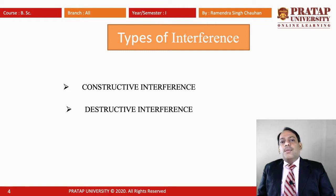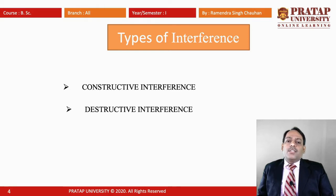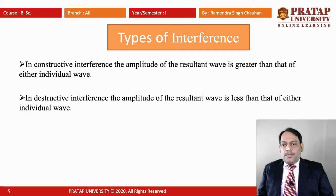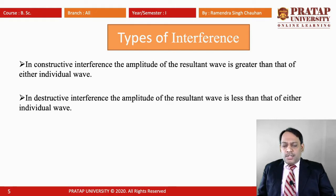Interference can be of two types: one is Constructive Interference and the second one is Destructive Interference. In Constructive Interference, the amplitude of the resultant wave is greater than that of either individual wave. When the intensity of one wave is adding to the intensity of the other wave in the same phase, we get plus A plus A, that is 2A.